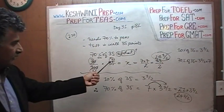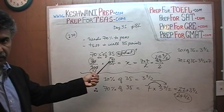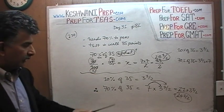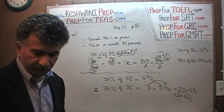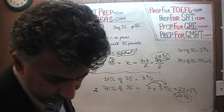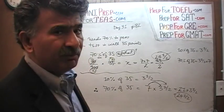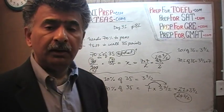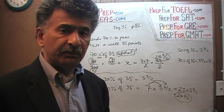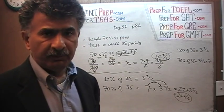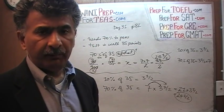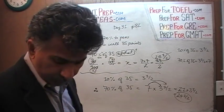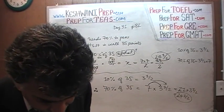So the first method is more of a traditional, orthodox, academic method. And this second approach is a bit unorthodox — where you simply ask yourself what is 10% of the number, and then 70% is just 7 times that amount. That's what it is. Let's do the next one, shall we?